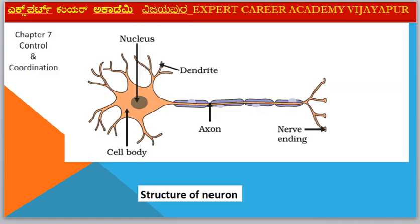Next diagram — Chapter 7: Control and Coordination. Diagram: Structure of Neuron. Parts include Cell Body, Nucleus, Axon, Nerve Endings, and Dendrites.